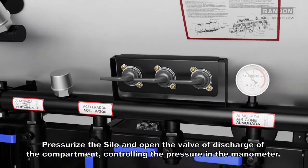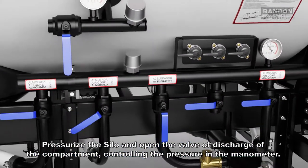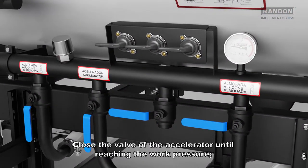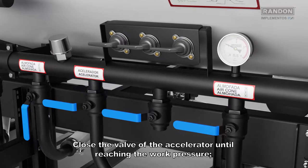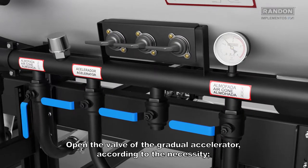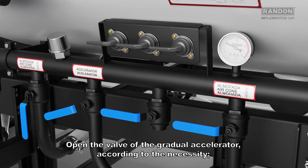Pressurize the silo and open the valve of discharge of the compartment controlling the pressure in the manometer. Close the valve of the accelerator until reaching the work pressure. Open the valve of the gradual accelerator according to the necessity.